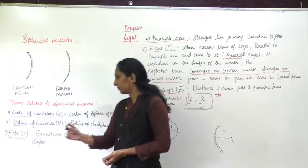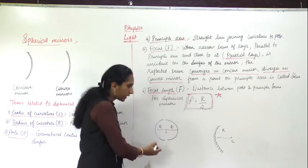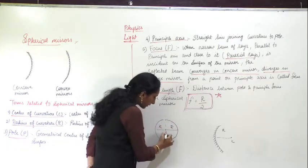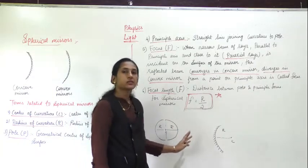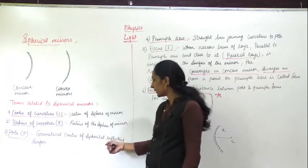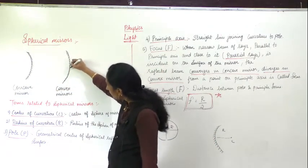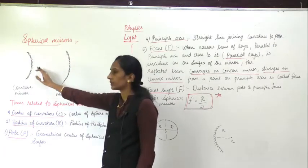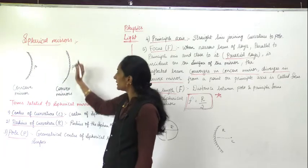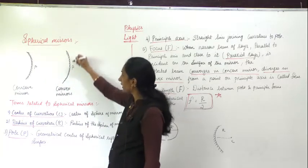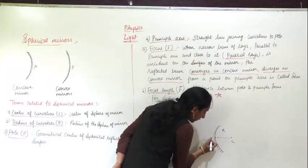The third term is pole. This is the midpoint of the mirror surface. If you consider the half part of the sphere, the midpoint of that half is the pole. The geometric center of the spherical reflecting surface is called the pole. Whenever you draw a concave or convex mirror, the midpoint of the surface is your pole P.